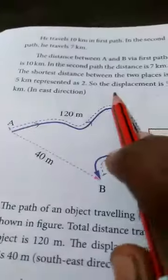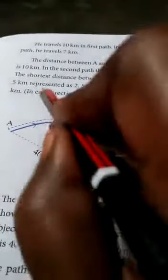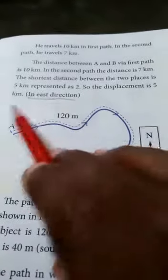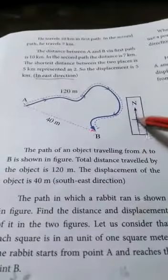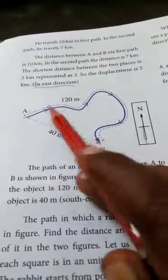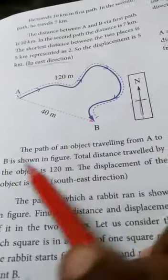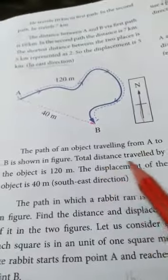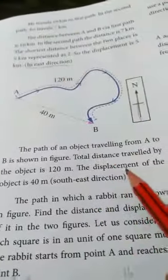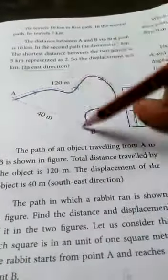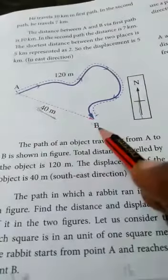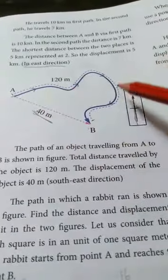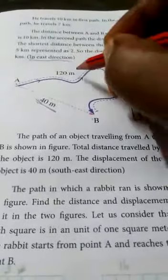So the displacement is 5 kilometers in the east direction. As shown in another figure, the path of a person traveling from A to B covers a total distance of 120 kilometers, but the displacement — the straight-line distance — is only 40 meters to the southeast.